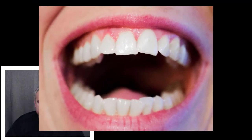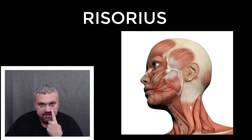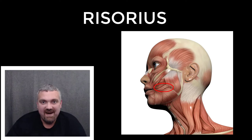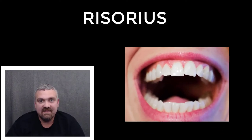Next, we have risorius. Risorius means laugher. And like you may have guessed, the risorius muscle is right in here, and it plays a role in smiling and laughing. Risorius means laugher.